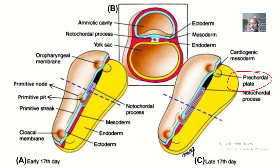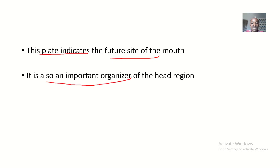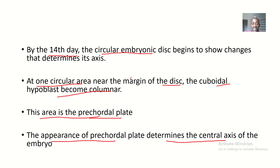This is the pre-cordial plate, and this is the notochordial process growing to the pre-cordial plate. The pre-cordial plate indicates the future site of the mouth — where the pre-cordial plate appears is where the mouth will develop. It is also an important organizer of the head region, since it determines the central axis and is actively involved in the organization of the head region.